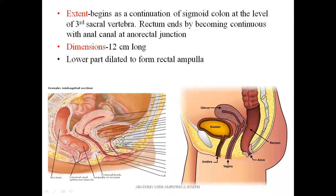This is a picture where a sagittal section of the female pelvis can be seen. The position of the rectum is between the sacral vertebrae and coccyx posteriorly, and anteriorly the vagina and the uterus. The lower part of the uterus can also be seen.